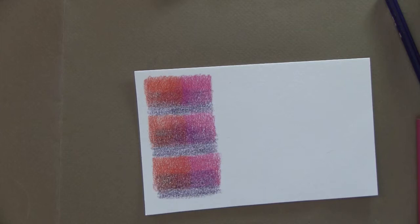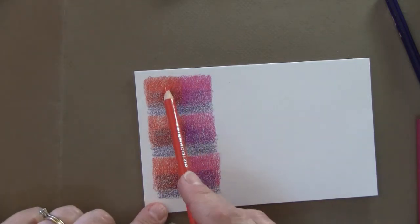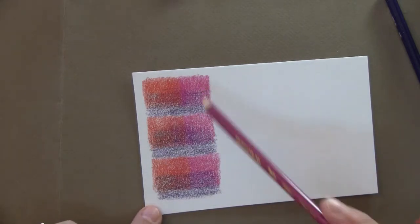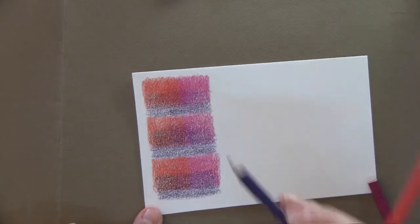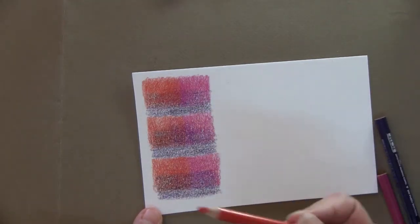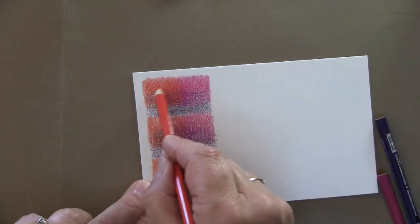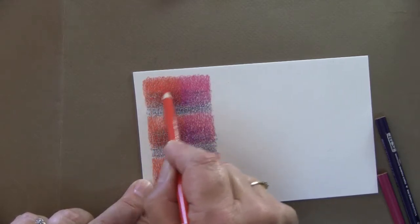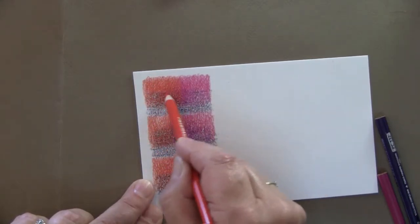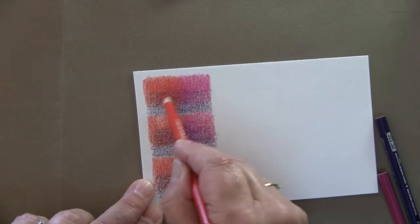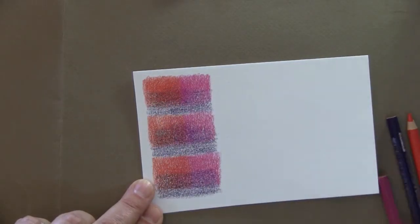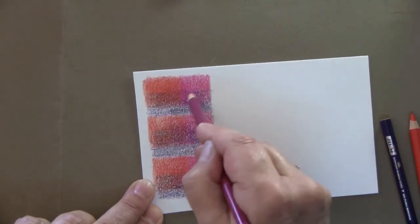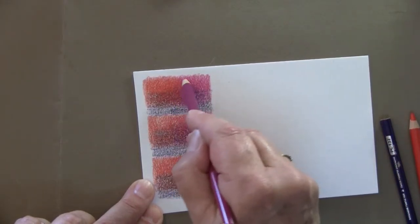So I've made some swatches here. I've got permanent red, process red, and I have dioxazine purple here. So normally you would color a swatch of your permanent red and you can do them in many layers. I'm just quickly doing these now here.